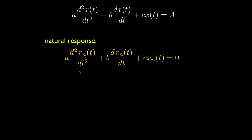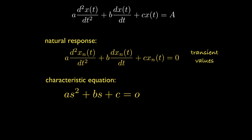The natural response for the equation is the response when there is no driving function, that is, when the driving function a is zero. Whereas the forced response gives us the final value for the solution, the natural response gives us the transient values — in other words, how the solution moves from its initial conditions to its final value. The key to determining the natural response is to find the roots for something called the characteristic equation. The characteristic equation is a second-order polynomial in a variable s, and its coefficients are the same as those for the original differential equation.